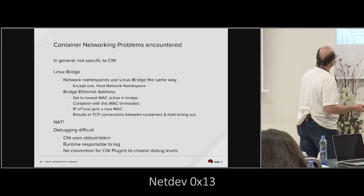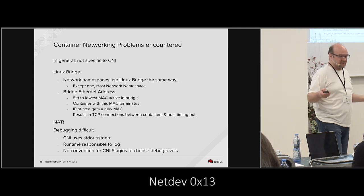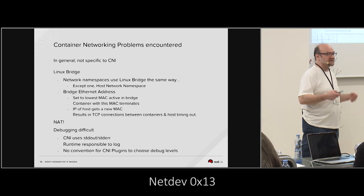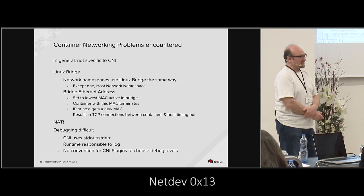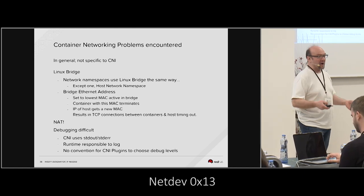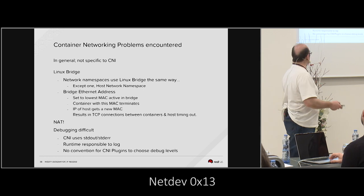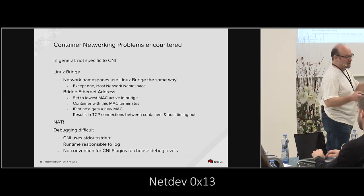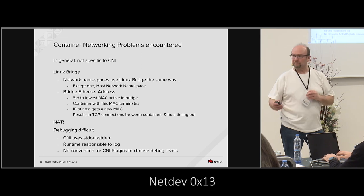Besides NAT, debugging container networking is starting to be a problem — there's still no great tooling. People know how to debug VMs and bare metal, but with containers the debugging is not as advanced. The runtimes have to do things, and what might work with one runtime won't work with another. Standard error tends to get lost when there are problems. With CNI plugins, there's no way to turn on debug logging levels to go from info to debug to help diagnose errors.